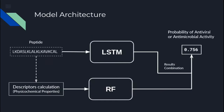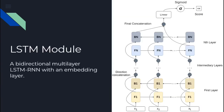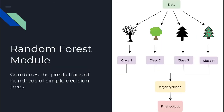The model has an ensemble architecture in which the results of two independent predictive models are linearly combined to generate the final score. For each peptide, its sequence is directly given as input to the LSTM model, while the random forest model receives as input some numerical descriptors calculated from the sequence. The two models perform their prediction on whether the peptide has a desired activity, and then we combine these predictions into a final score between 0 and 1. The LSTM model is a bidirectional multilayer recurrent neural network that reads a single amino acid from the sequence in both directions at each time step. The random forest model combines the predictions of hundreds of simple decision trees to classify the given peptide, utilizing its physicochemical properties.